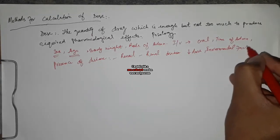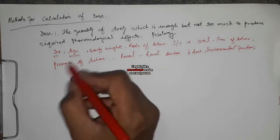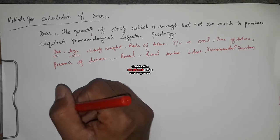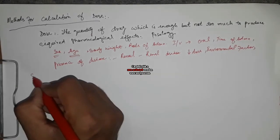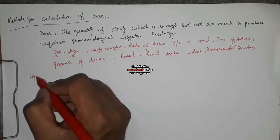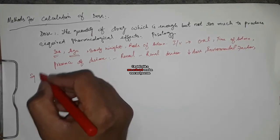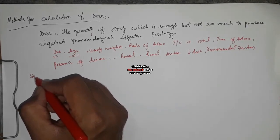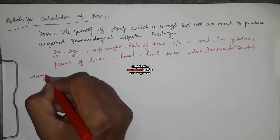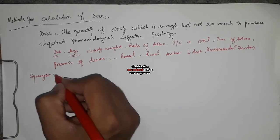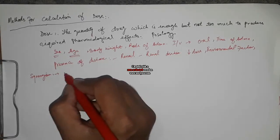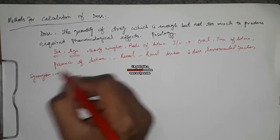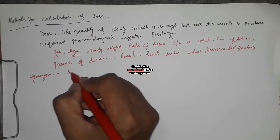There are also other factors affecting dose, such as environmental factors, genetic factors, ethnic factors, and emotional factors. Another important factor is the presence of synergistic agents — synergism means when two drugs A and B are given together.